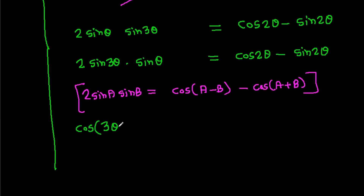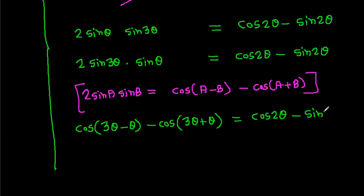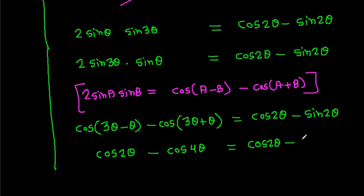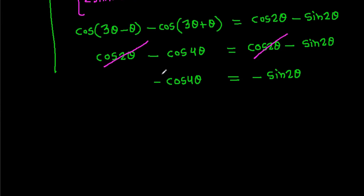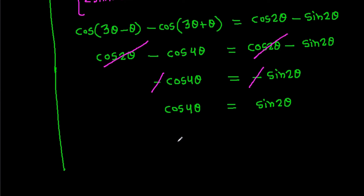So 2 sin 3 theta sin theta will be cos(3 theta minus theta) minus cos(3 theta plus theta), which equals cos 2 theta minus cos 4 theta. This is equal to cos 2 theta minus sin 2 theta. The cos 2 theta terms cancel, leaving minus cos 4 theta equals minus sin 2 theta, so cos 4 theta equals sin 2 theta.